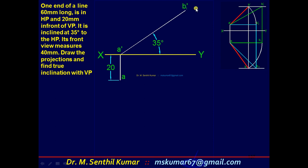Start with the true length and true angle theta. Complete the preliminary front view. So draw a 35 degree line, then mark b1 dash as said. A dash b1 dash is equal to the true length, 60. Now complete the preliminary front view.